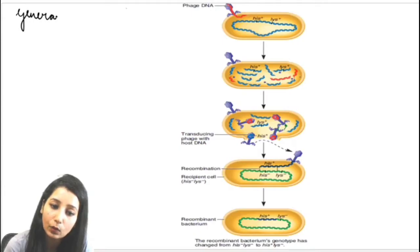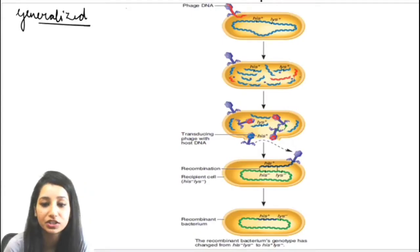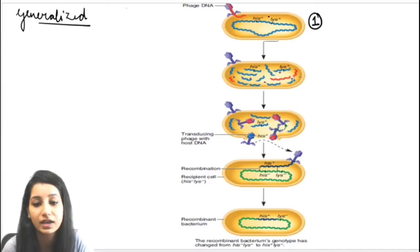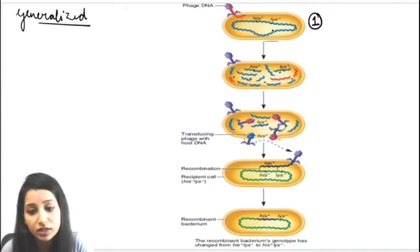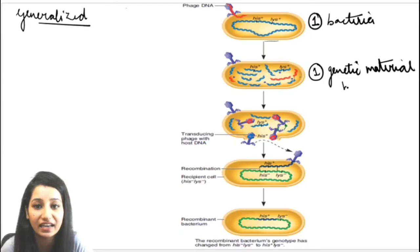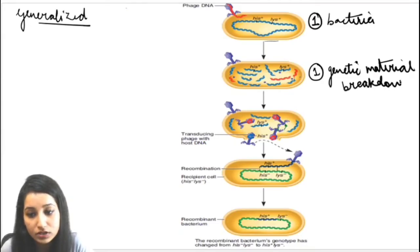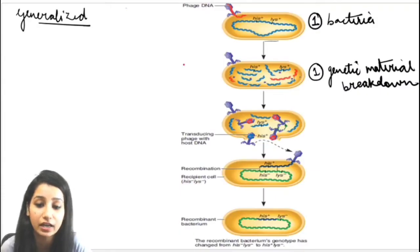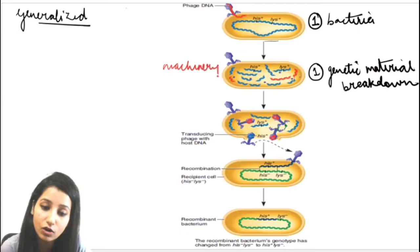In generalized transduction, a bacteriophage infects the bacteria. The genetic material of the phage is going to be inserted into the bacteria. Due to this, the first bacterium will begin to break down — its own genetic material will get broken down because the phage DNA has come inside and will take control of the bacteria.